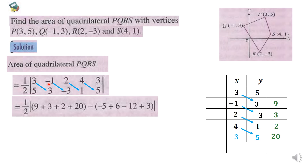5 times negative 1 equals negative 5. 3 times 2 equals 6. Negative 3 times 4 equals negative 12. 1 times 3 equals 3.